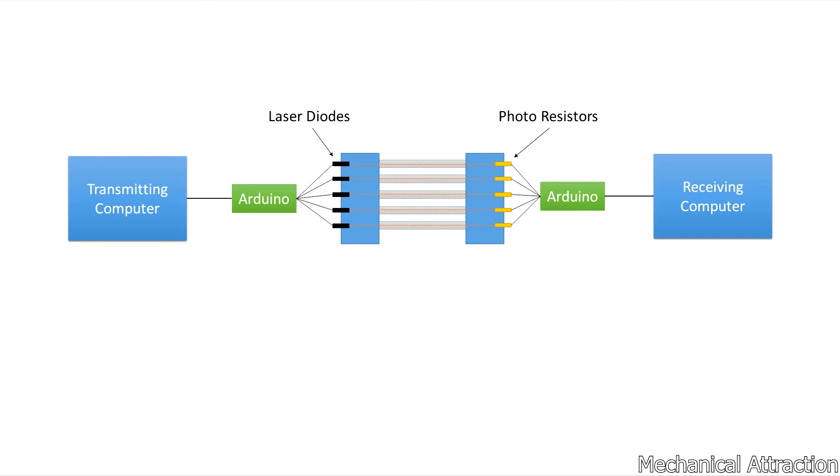To give you an idea on how this thing is going to work, we're going to have a transmitting computer that's going to send a signal to an Arduino that's going to then send it to individual laser diodes which will then pass through the acrylic medium to the photoresistors at the other side which will then run to another Arduino and then will be picked up by the receiving computer.